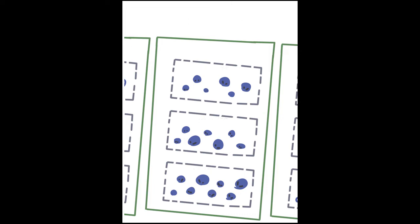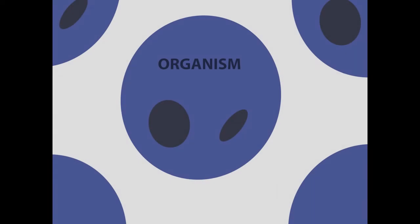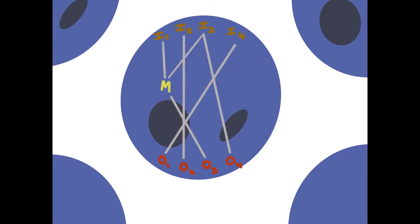Now, you might wonder what the little blue circles are. Those represent the individual organisms inside of the species. When I say organism, I actually mean a version of the neural net that we will actually be using to train and run inside our simulations.